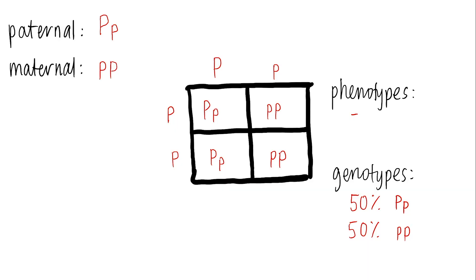Translating these into phenotypes: 50% will be purple because they carry the dominant big P allele, and 50% will be white because they carry two recessive genes for the white trait.